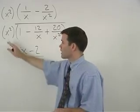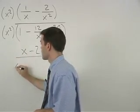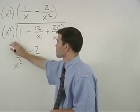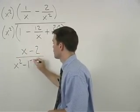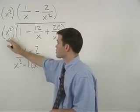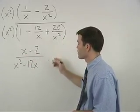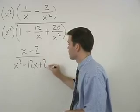In the denominator, x squared times 1 is x squared. x squared times negative 12 over x is negative 12x, and x squared times positive 20 over x squared is positive 20.